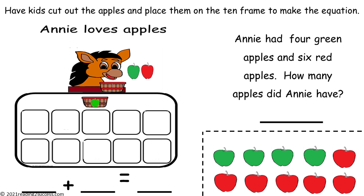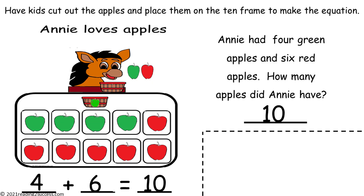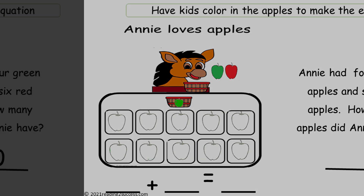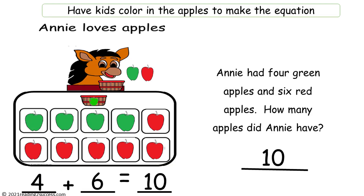With kids, read the problem: Annie had 4 green apples and 6 red apples. How many apples did Annie have? Now have kids cut out the apples and place them on the 10 frame to make the equation: 4 green apples plus 6 red apples equals 10 apples. A second option is to have kids color in the apples to make the equation. This is a completed example.